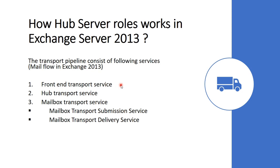The front-end transport service runs on all Client Access Servers for inbound and outbound external SMTP traffic in Exchange 2013. Next is the hub transport service. The hub transport service routes messages between the mailbox transport service, the hub transport service, and the front-end transport service. This service is virtually identical to the hub transport server in previous versions.